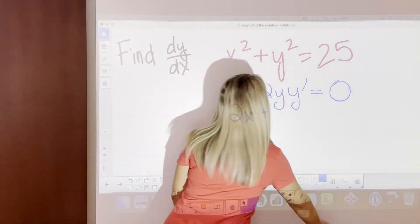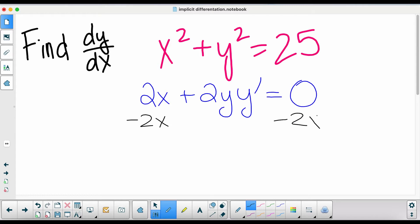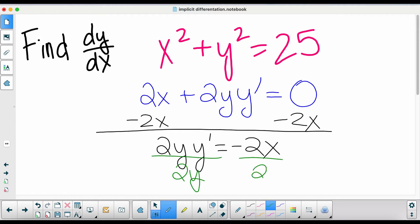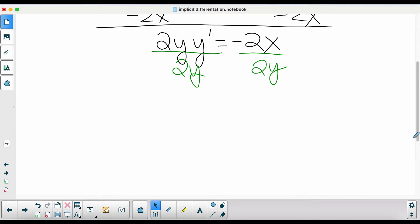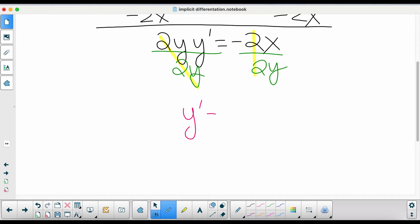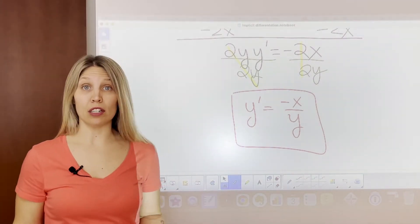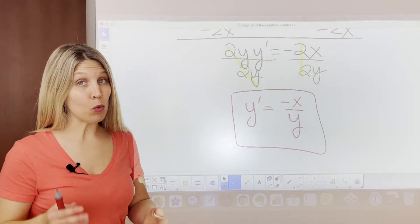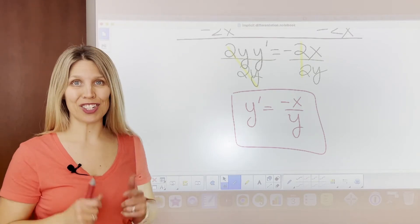First move 2x to the other side: 2y·y prime equals negative 2x. Then divide by 2y to get rid of it — the 2s drop out — and we're left with y prime equals negative x over y. That's how you do implicit differentiation: take the derivative, multiply y by y prime, then solve for y prime.